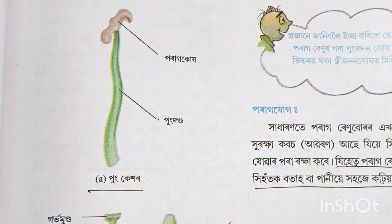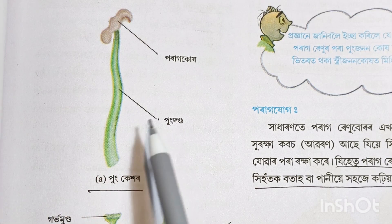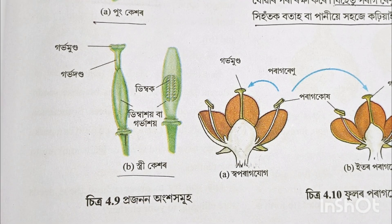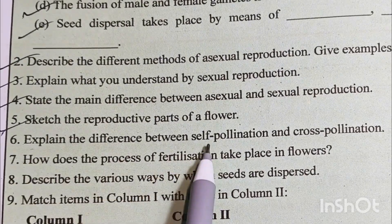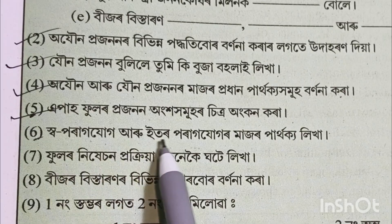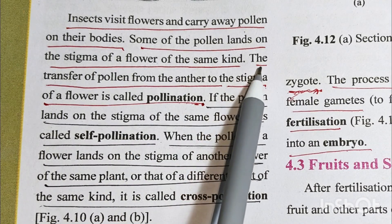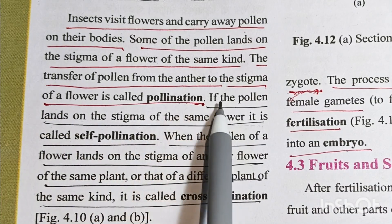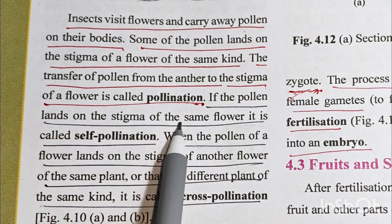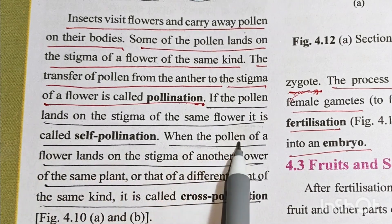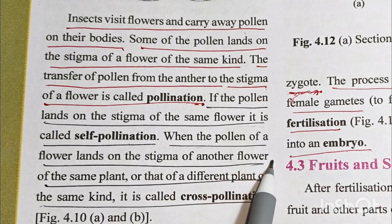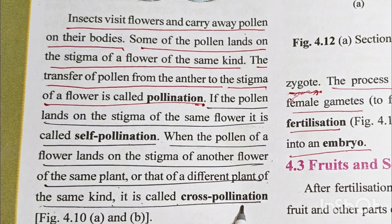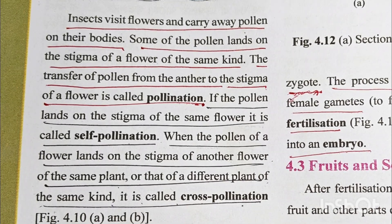Number 5: The transfer of pollen from the anther to the stigma of a flower is called pollination. If the pollen lands on the stigma of the same flower, it is called self-pollination. When the pollen of a flower lands on the stigma of another flower of the same plant or that of a different plant of the same kind, it is called cross-pollination.